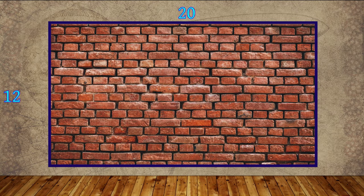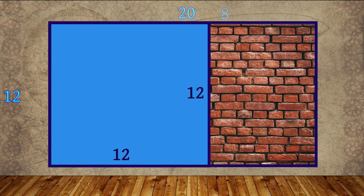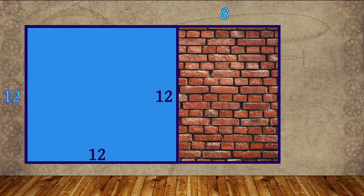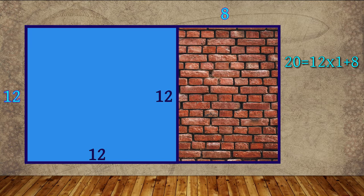In this wall, the greatest square shape tile that can fit in is 12 by 12 meter square. After fitting it, 8 by 12 meter square space will be left up. Mathematically, 20 is equal to 12 into 1 plus 8. Now 8 by 12 meter square will be covered by 8 by 8 meter square tile.